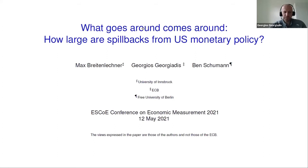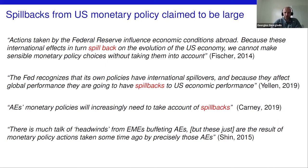The paper I'm presenting is about spillbacks from U.S. monetary policy, joint work with Max Breitenleschner and Ben Schumann. There's a large literature documenting that spillovers from U.S. monetary policy to the rest of the world are large and substantial. There also seems to be an understanding that spillbacks — the inward spillovers resulting from those outward spillovers — are large as well. For example, Stan Fisher stated in 2014 at the IMF annual meetings that actions taken by the Fed influence economic conditions abroad.